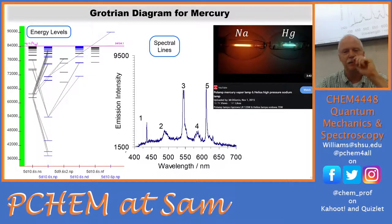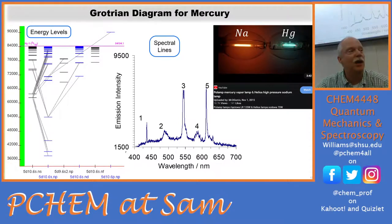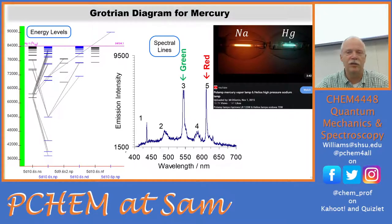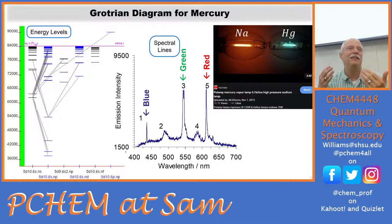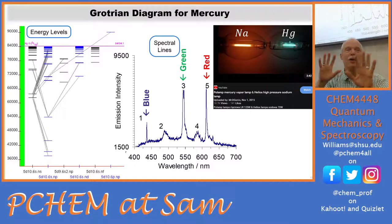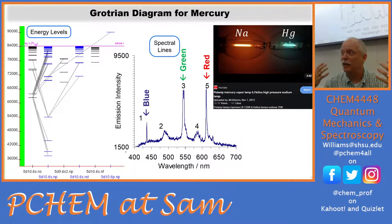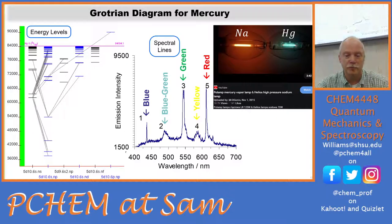Here's the mercury spectrum. This is why we still use mercury in room lighting — it gives us red, green, and blue photons that hit the three pigments in our eyes so we see white light. Even though many wavelengths are missing, our brain says it's getting light from all three parts of the spectrum — red, green, blue — so it looks white. It also has a little yellow and blue-green.